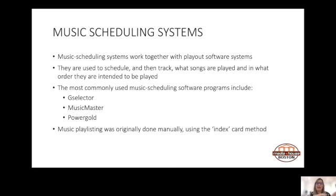From the playout system, we now move to music scheduling systems. Music scheduling systems work together with playout software systems. They're used to schedule and then track what songs are played and in what order they are intended to be played. The most commonly used music scheduling software programs include GSelector, MusicMaster and PowerGold. Originally, music playlisting was done manually using what was known as the index card method.